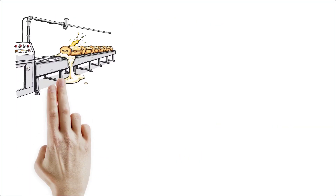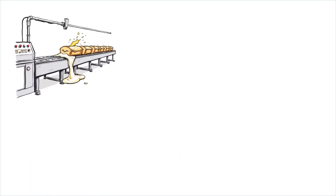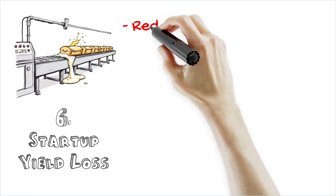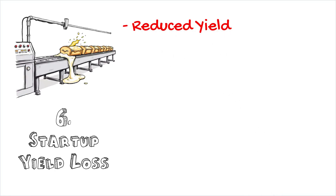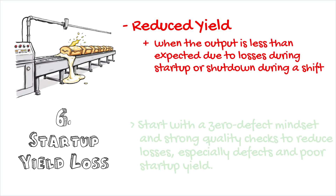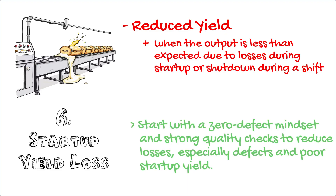Finally, there's reduced yield, which occurs when the output is less than expected due to losses during startup or shutdown during a shift. Implementing a zero defect mindset from the beginning of a process and maintaining stringent quality checks helps mitigate this loss.